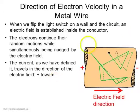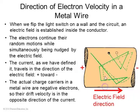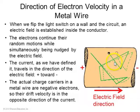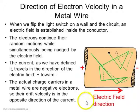We've defined the current as always going from plus to minus — that's the flow of positive charge. But in reality, in a metal wire, the drift velocity of these tiny electrons is actually in the opposite direction. That's something to keep in mind.